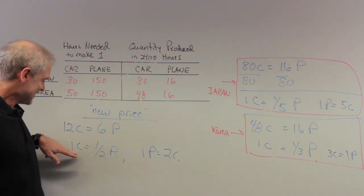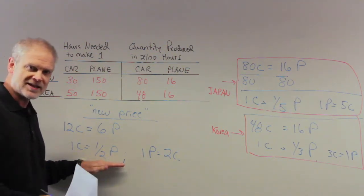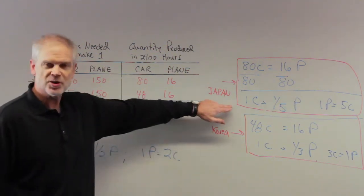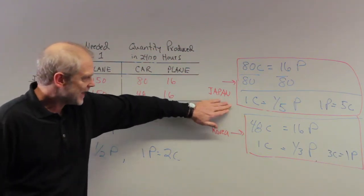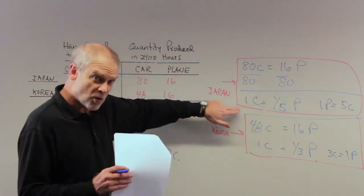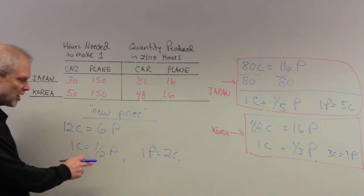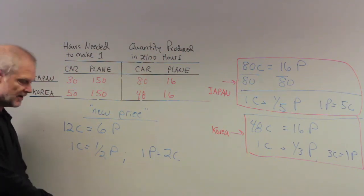So for Japan, suddenly, their cars are much more valuable because they can buy more planes than they could do it internally themselves. Japan has to give up, every time they produce a car, they give up a fifth of a plane. Or in other words, one car costs them a fifth of a plane. And here, one car in this market costs half a plane.